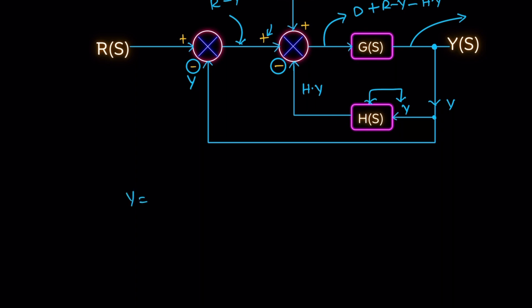So the final result, Y equals Y equals G times D plus R minus Y minus H Y.